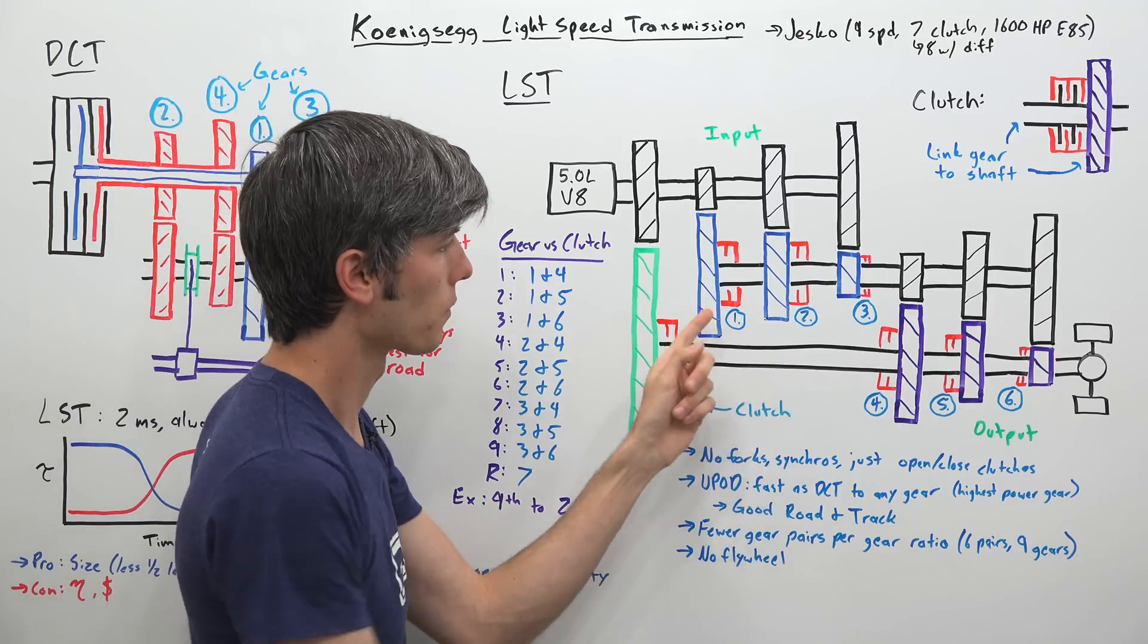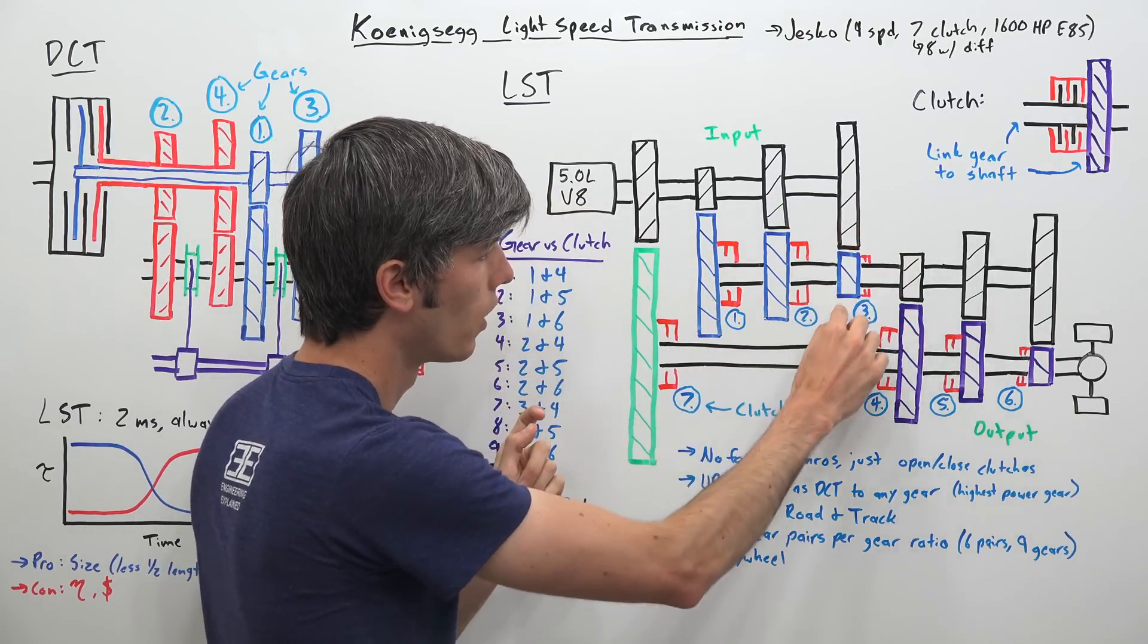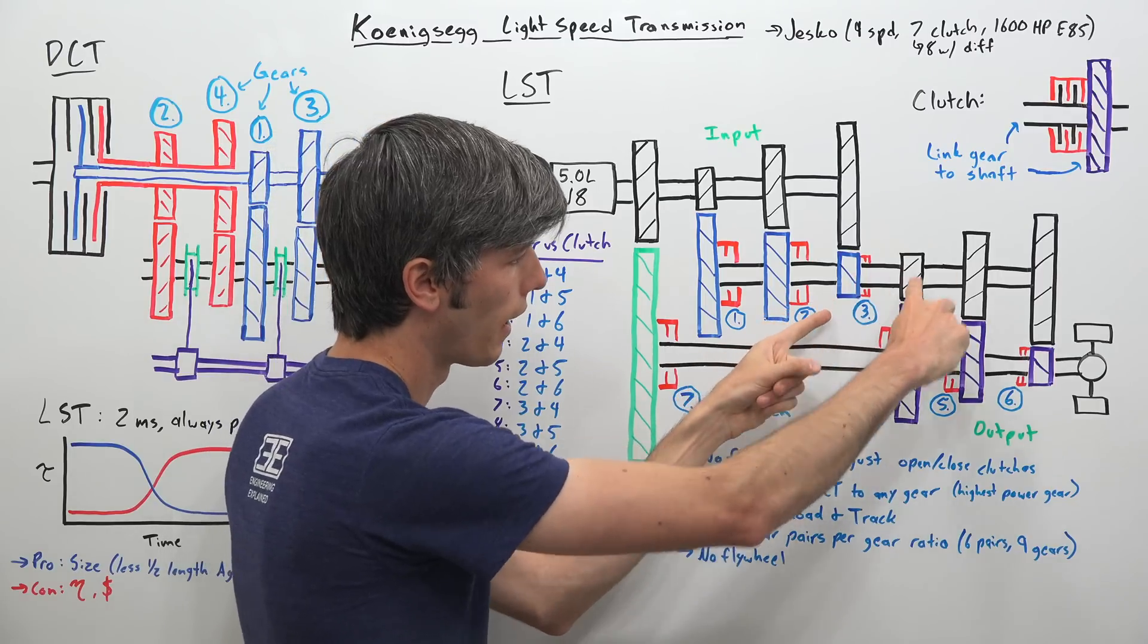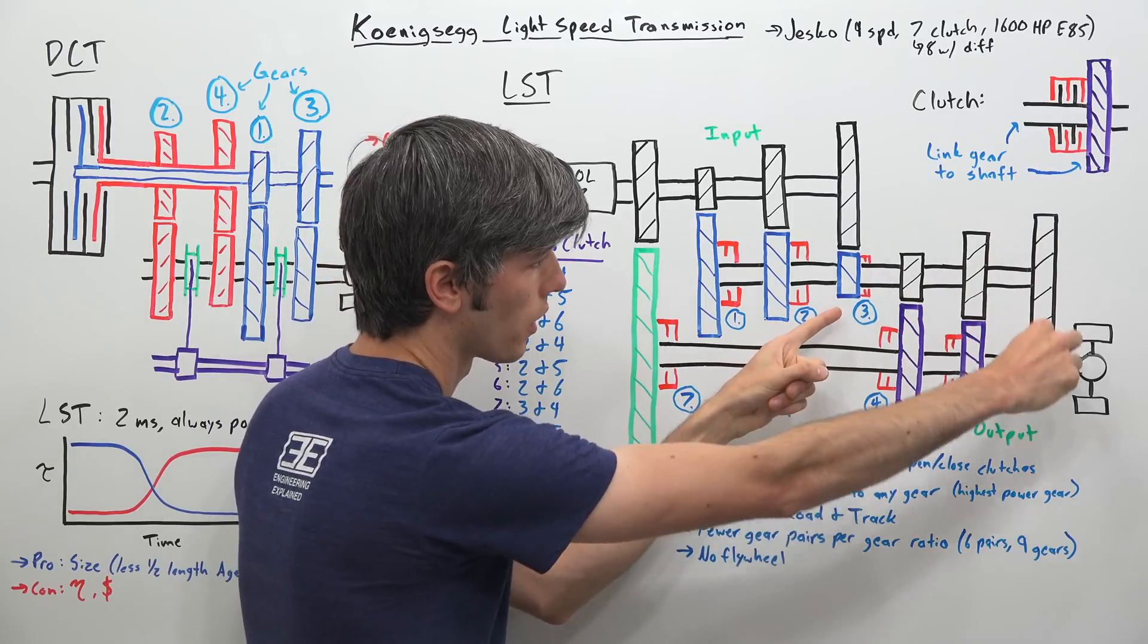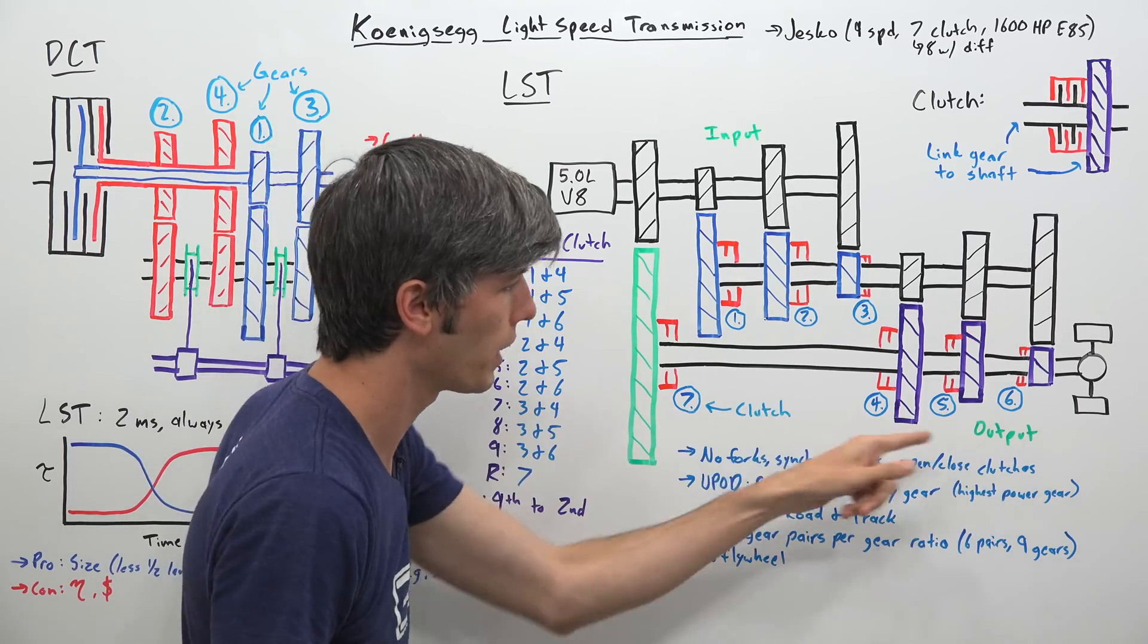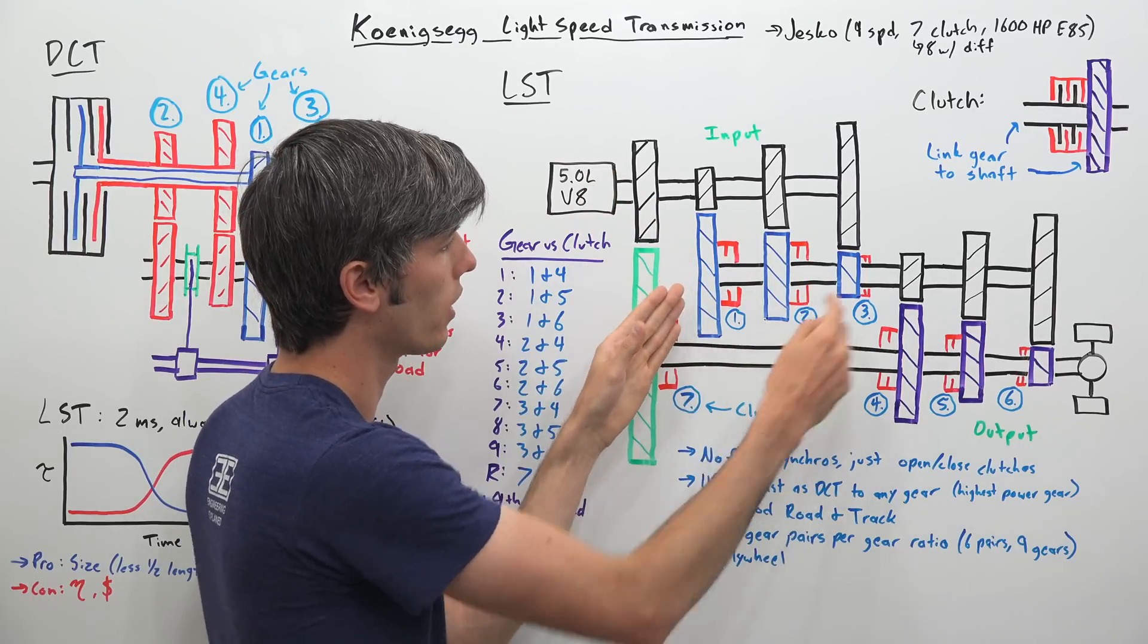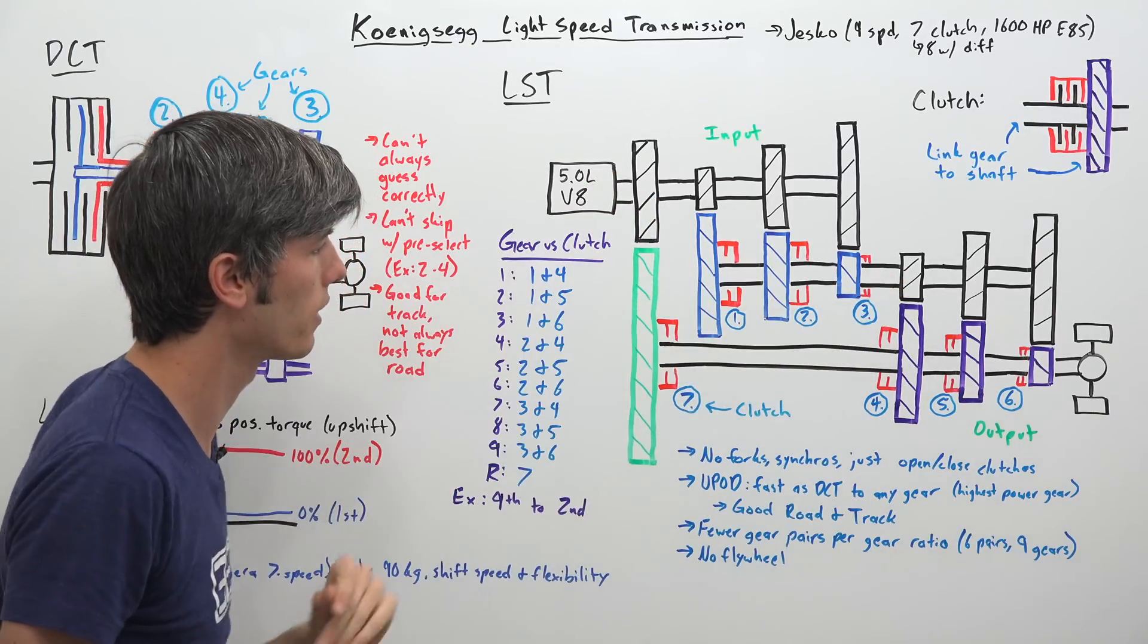And then for gears seven, eight, and nine, same thing. You open up this, this one is also open, power comes across, over to the third clutch right here, and then to one, to two, to three. So that's six, seven, eight. So this will be gears one, two, and three, four, five, and six, seven, eight, nine, depending on which one of these gears you have selected here on this secondary shaft.